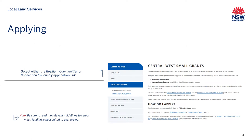You will be brought to the current Funding Opportunities page. Your first step should always be reviewing the grant guidelines. This provides you with information regarding your eligibility, assessment criteria and the general terms and conditions of applying for a small grant. There are currently two streams of small grants open: the Resilient Community Small Grants, open to community groups, and the Connection to Country Small Grants, open to Aboriginal owned and operated organisations.